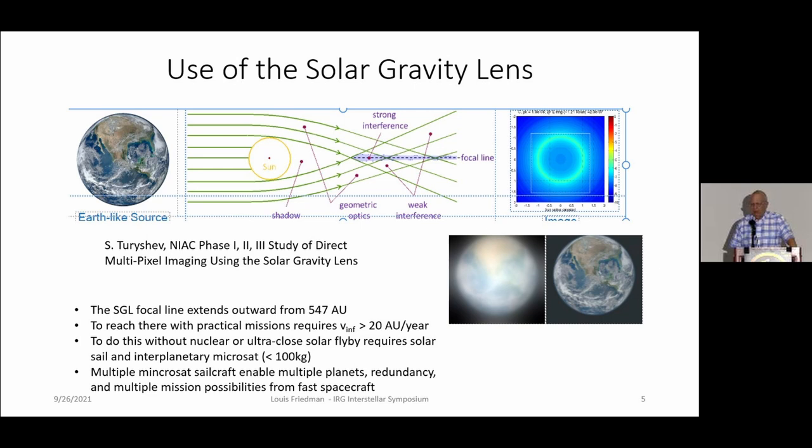So you end up getting a convoluted image, which is the one on the left there. And then when it's deconvoluted, you'll end up with the image of the exoplanet. This work is being done by Slava Turishev at JPL. He's now gone through all the simulations necessary, including even accounting for the sun's oblateness and all the factors that could perturb that imaging process. You will spend your time on the focal line doing that deconvolving and producing the images of the exoplanets.